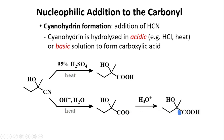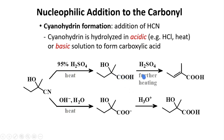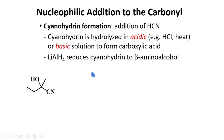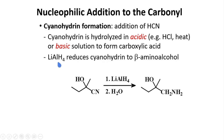There's a further reaction that may occur. If you heat this up, you can dehydrate it, for example with sulfuric acid, to form an alpha-beta unsaturated compound. A reducing agent, such as lithium aluminum hydride, can reduce cyanohydrin to beta-amino-alcohol.